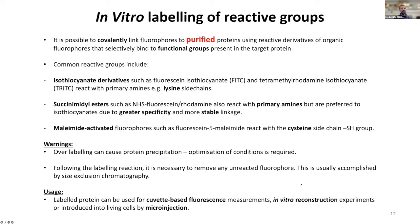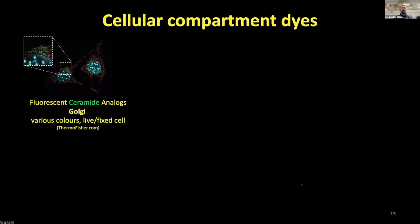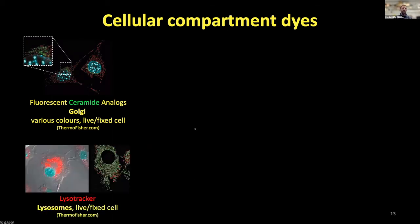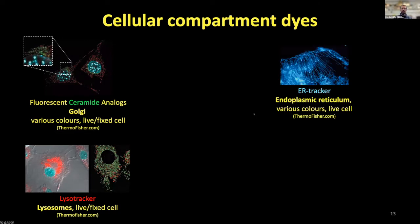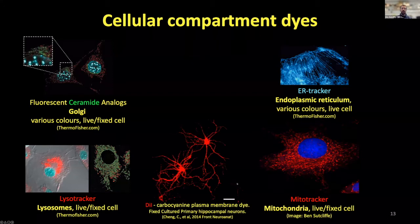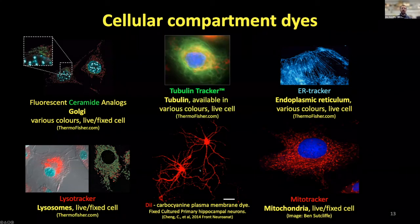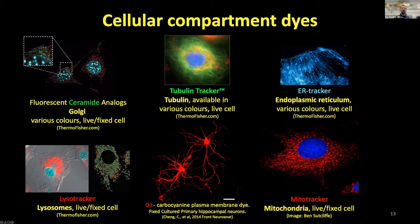Compartment dyes provide another way to label different parts of the cell. Fluorescent ceramide analogues label the Golgi in various colors and can be used in live or fixed cells. LysoTracker labels lysosomes, ER-Tracker labels the endoplasmic reticulum, and MitoTracker labels mitochondria, all available in various colors. DiI can be injected into cells and tracks along the plasma membrane, useful for labeling entire cell processes such as campanile neurons. There is also tubulin tracker for labeling tubulin in live cells.